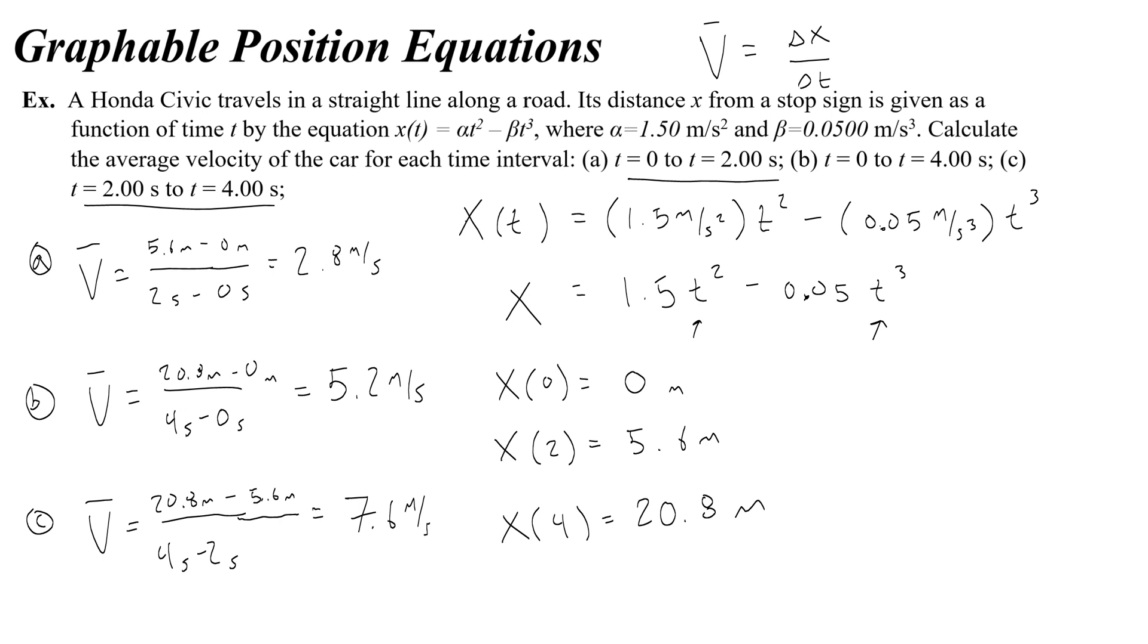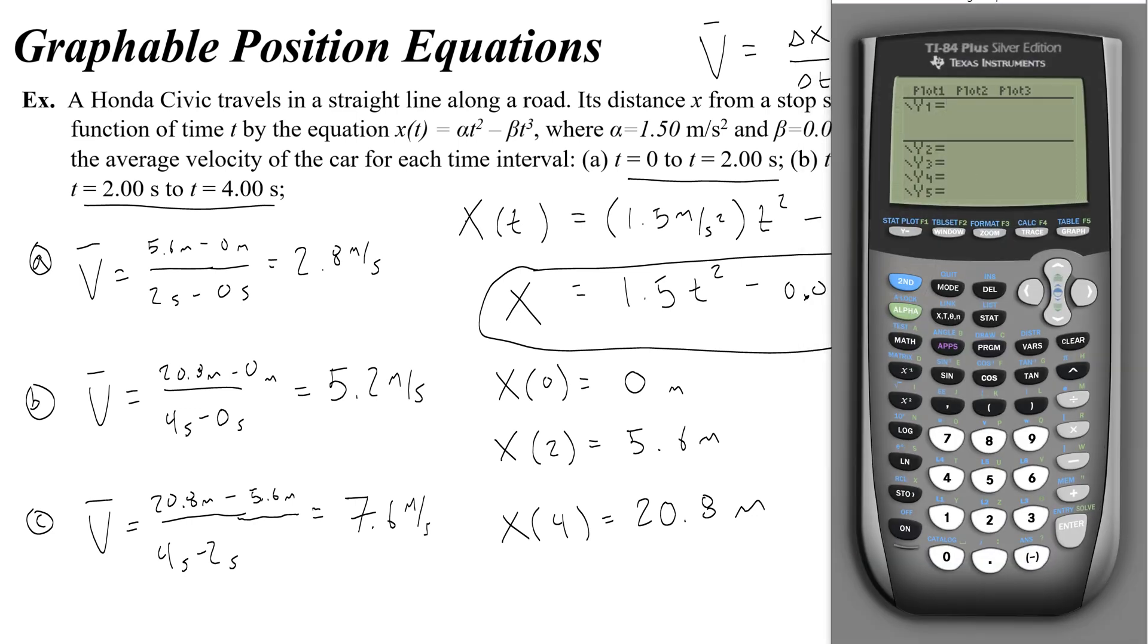So basically, by writing our equation in this sort of math-friendly, graphable way, it's easy for us to organize our thoughts and our work for calculating things like average velocities. And what we're going to find is that it also is useful if we wanted to try and solve something with a graphing calculator. So you're allowed to use a graphing calculator on the AP test.